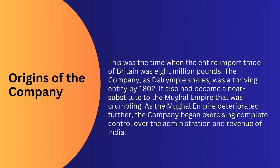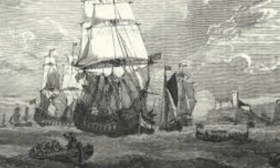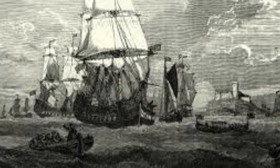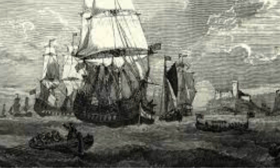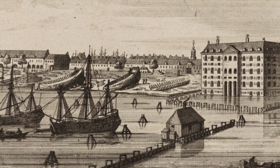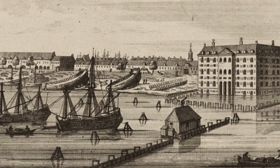By 1802, the company had also become a near substitute to the Mughal Empire, which was crumbling. As the Mughal Empire deteriorated further, the company began exercising complete control over the administration and revenue of India. Dalrymple's The Anarchy is a heavily researched book that explores how Western powers exercised their influence over India, which was over 6,000 kilometers away, in the 1500s — when it required nearly a month or more to travel such distances.